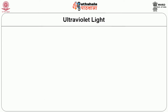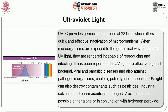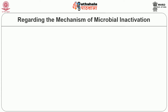UVC provides germicidal functions at 254 nanometers, offering quick and effective inactivation of microorganisms. When microorganisms are exposed to the germicidal wavelength of UVC, they are rendered incapable of reproducing and infecting. UV light is effective against bacterial, viral, and parasitic diseases and also against pathogenic organisms such as cholera, polio, typhoid, and hepatitis. UV light can also destroy contaminants such as pesticides, industrial solvents, and pharmaceuticals through UV oxidation.